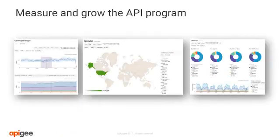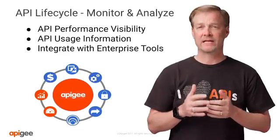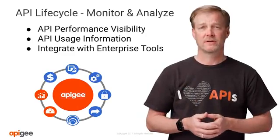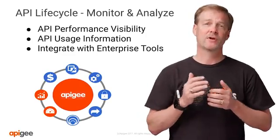Metrics are also used to measure and grow your API program. Understanding usage patterns, most consumed API proxies, API proxy consumption trends by month, day, or even by hour, and much more — all this data provides a wealth of knowledge waiting to be tapped so your company can make good decisions and investments to grow your API program. Many companies also prefer to integrate the monitoring and analytics data with other systems, and Apigee offers the ability to integrate this data via APIs to those other enterprise tools.